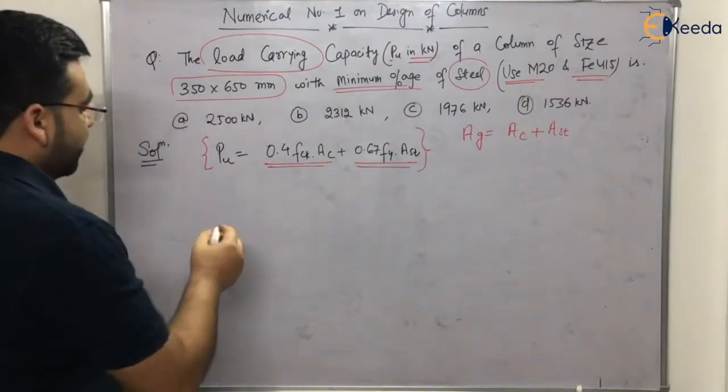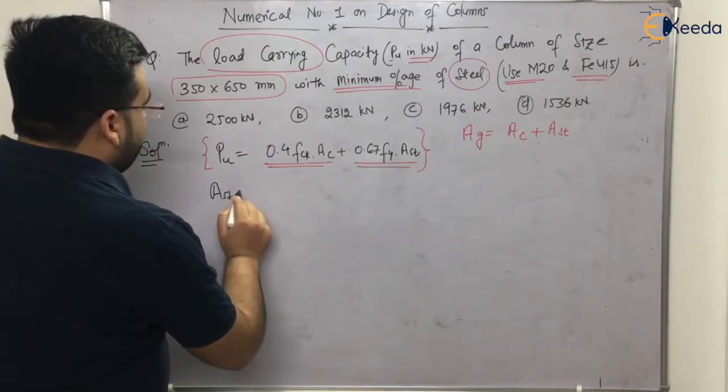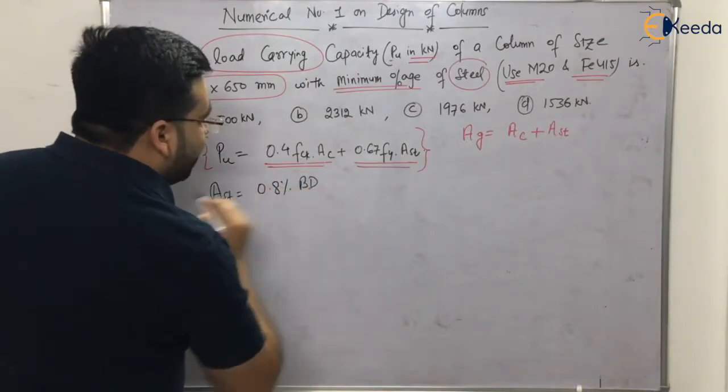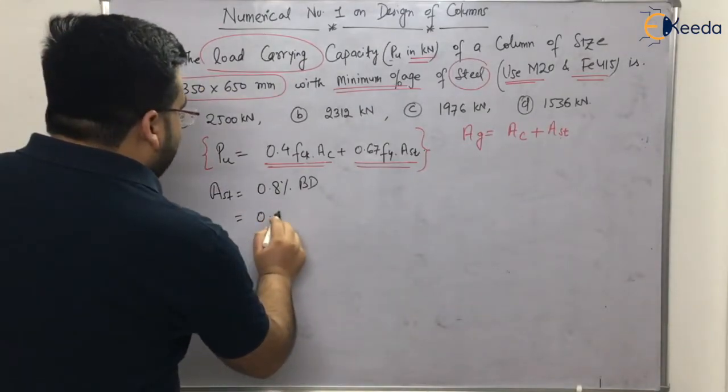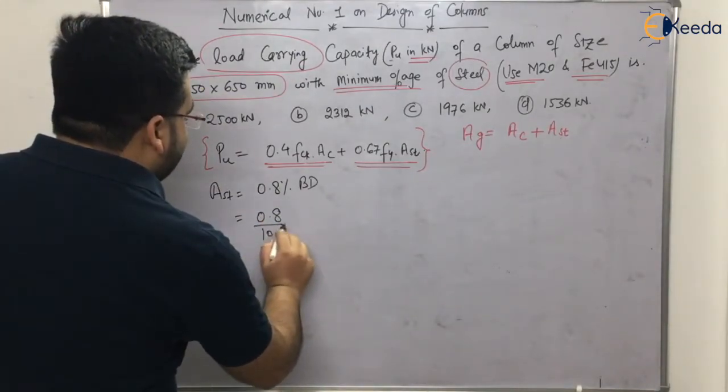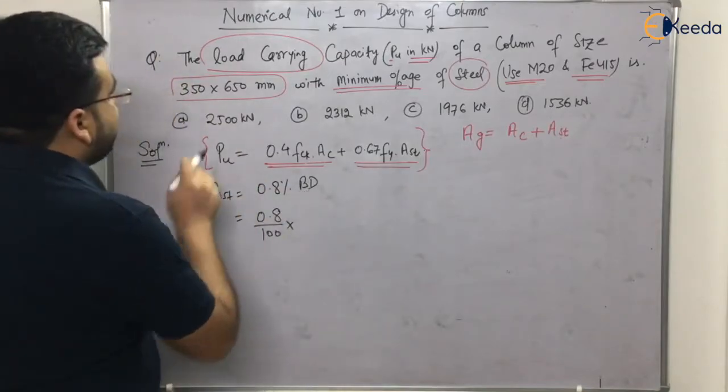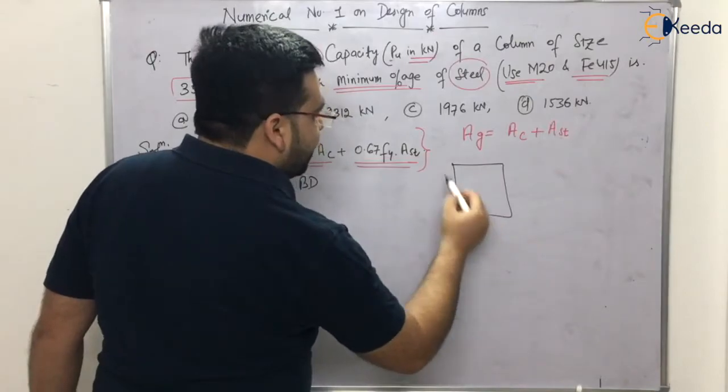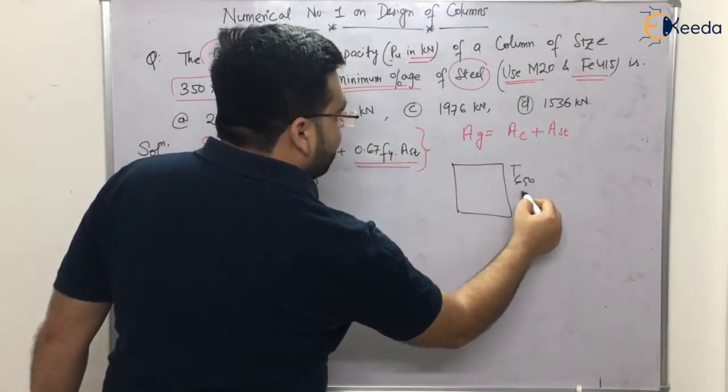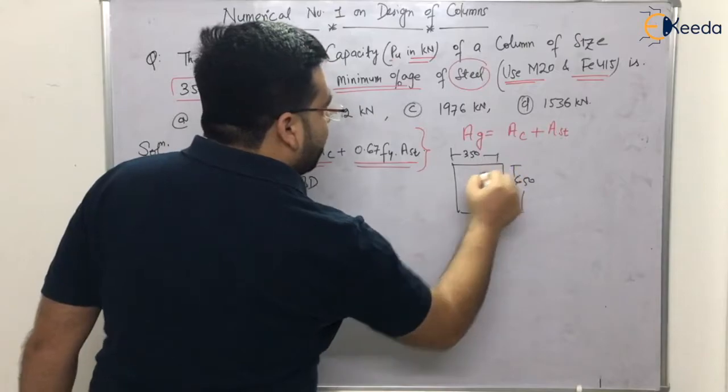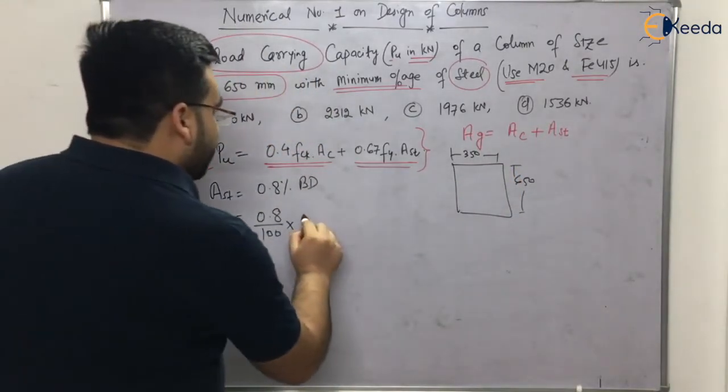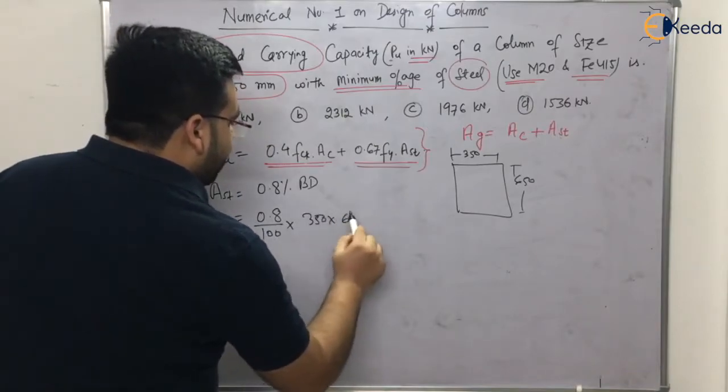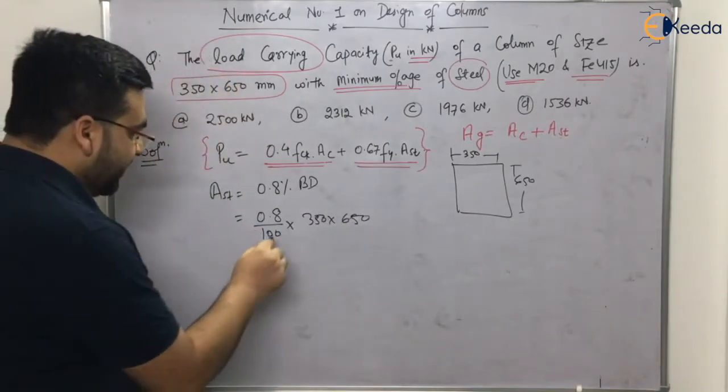AST will be equal to 0.8 percent of B into D, gross cross section area. 0.8 divided by 100 into the gross cross section area will be 350 into 650. So the column is like this: this is your 650 and this is your 350.